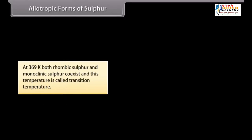At 369 Kelvin, both rhombic sulphur and monoclinic sulphur co-exist and this temperature is called transition temperature. Sulphur dioxide.